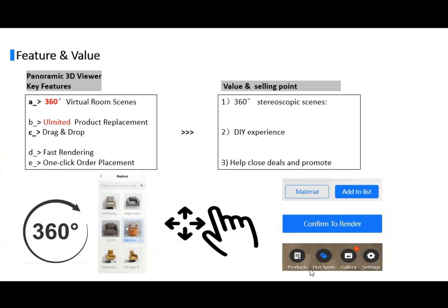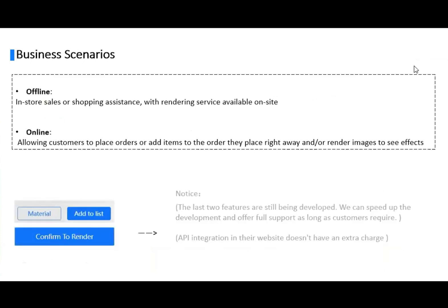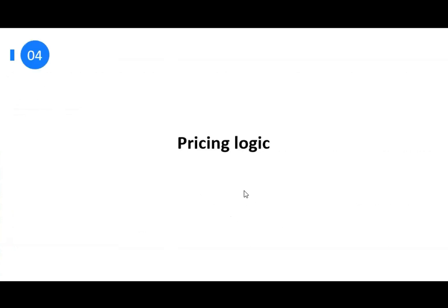There are more and more product display methods for e-commerce businesses, and I hope you're interested in this one. The two main business scenarios are: offline — for shopping assistant rendering surveys; and online — allowing customers to place orders and take rendered results away immediately.